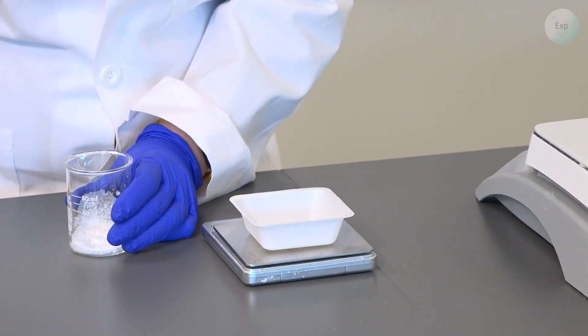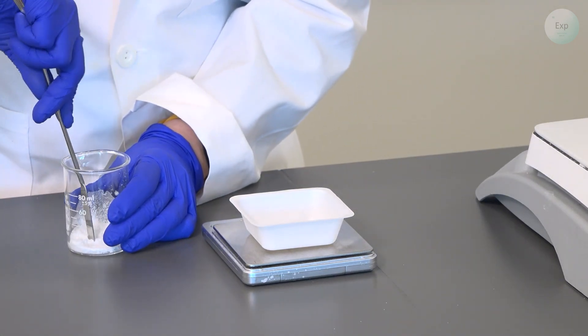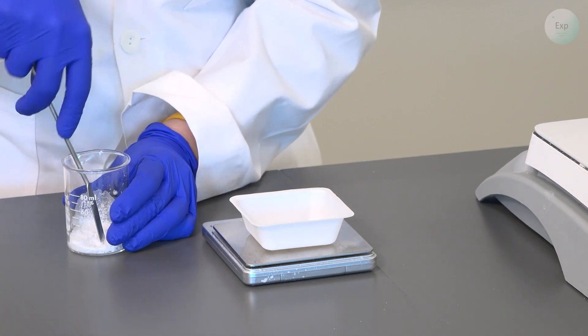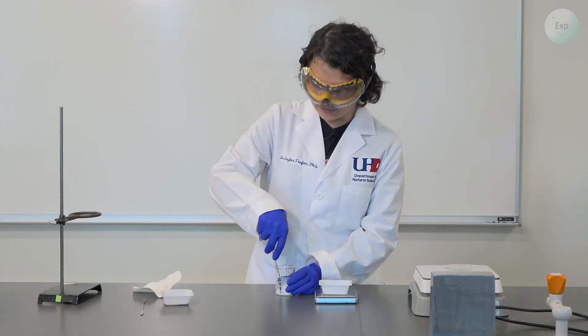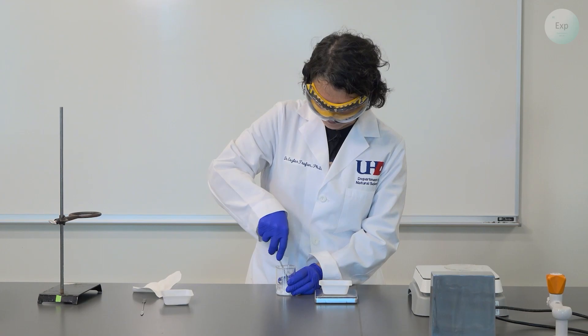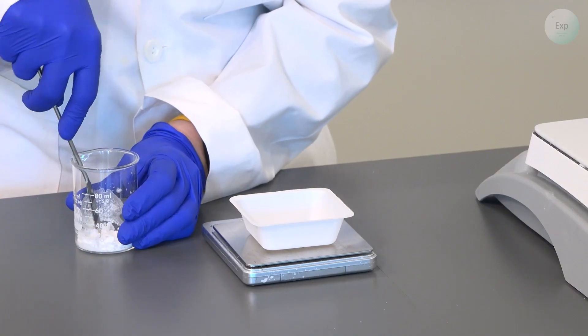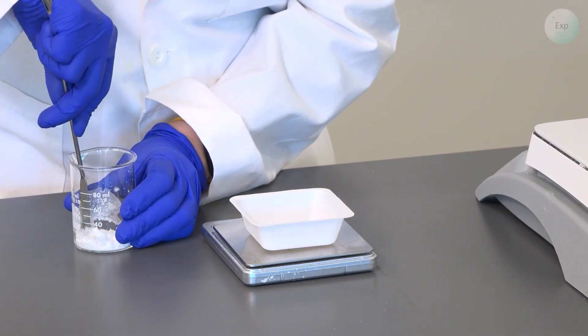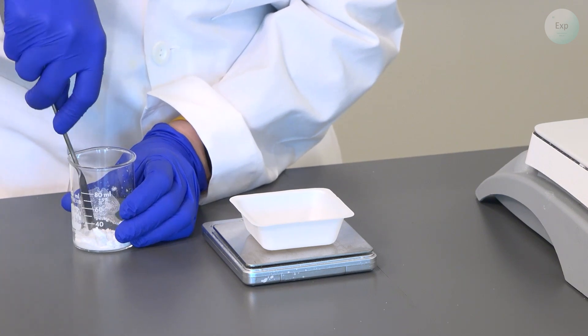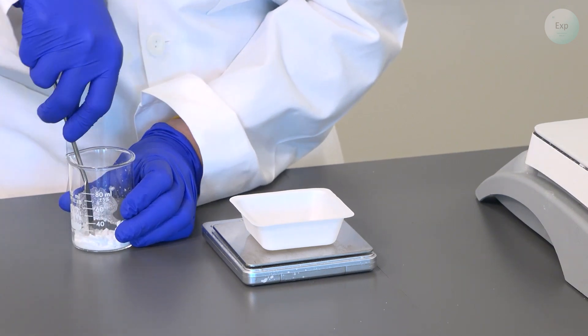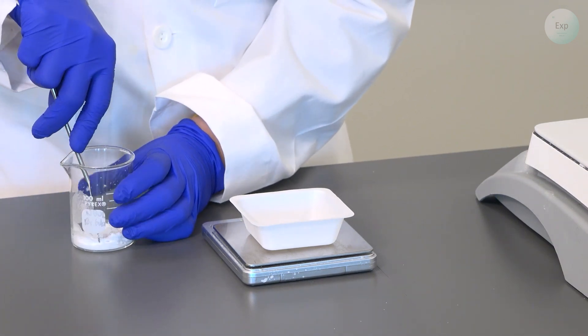Next, when the beaker is cold enough to work with, we're going to scrape out the salt from within. We have to be somewhat gentle because the beaker is made of glass and it is relatively easy to break glass.